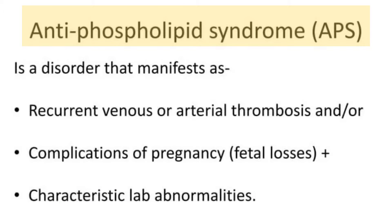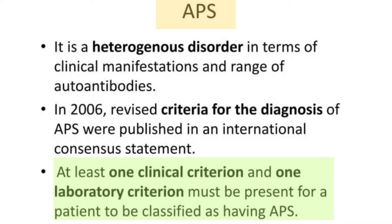Antiphospholipid syndrome primarily presents as recurrent venous or arterial thrombosis and/or complications of pregnancy including recurrent fetal losses, plus characteristic lab abnormalities. Due to the wide range of clinical manifestations and associated antibodies, in 2006 revised criteria for the diagnosis were published in an international consensus statement. At least one clinical criterion and one laboratory criterion must be present for classification.